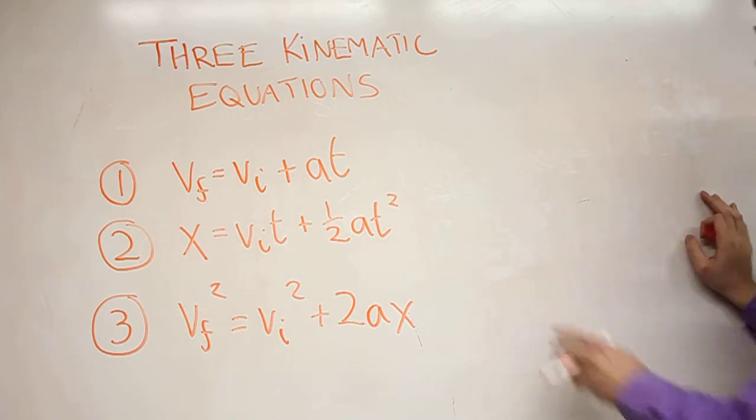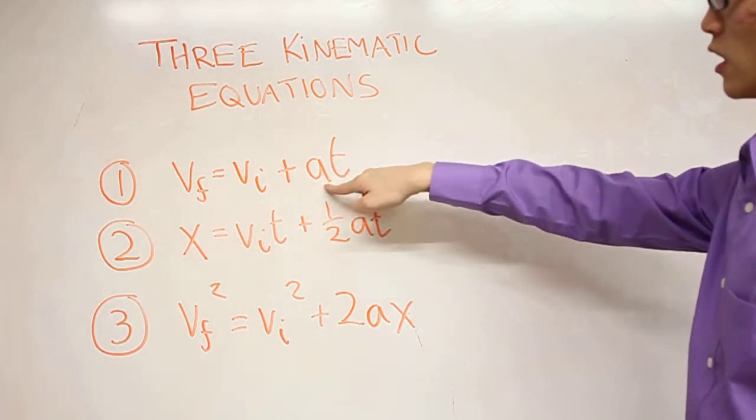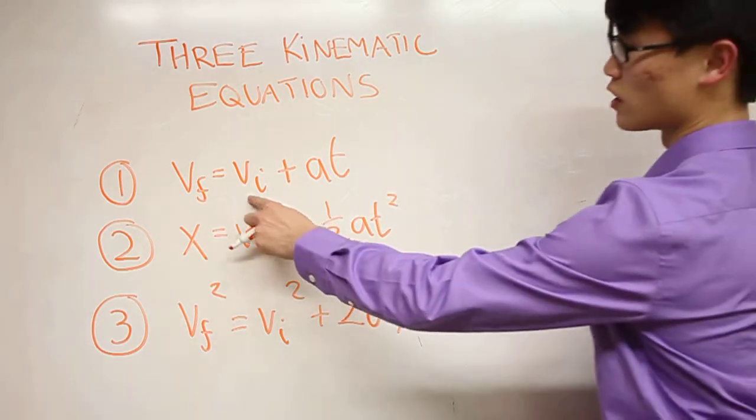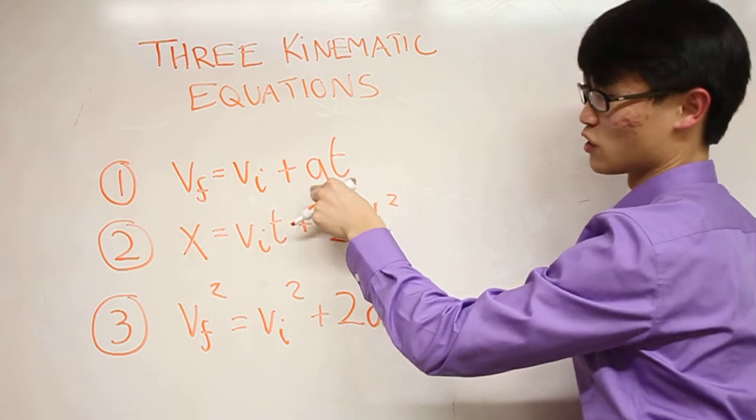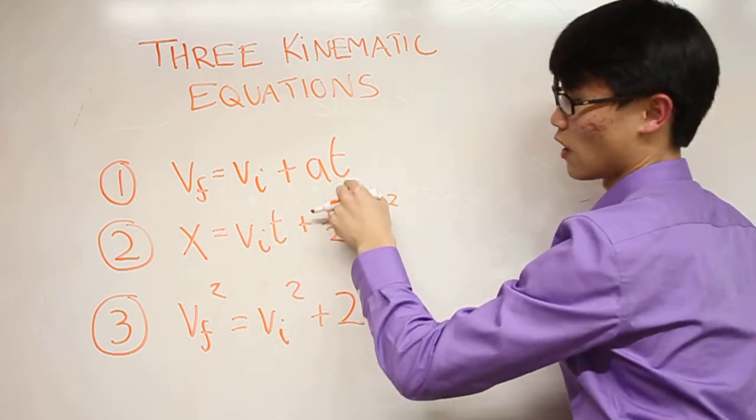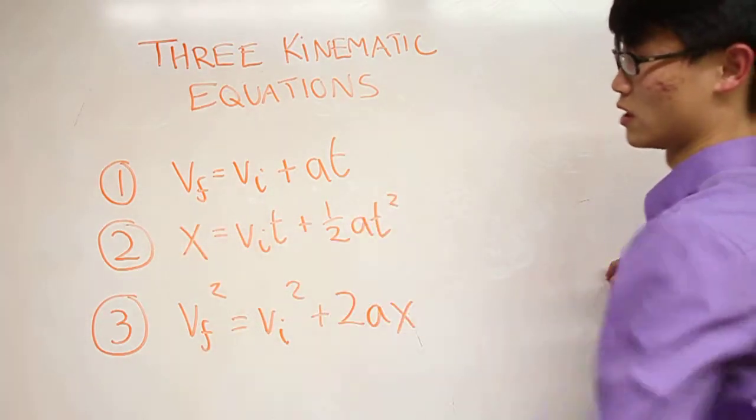I'm going to quickly go through these. First, we have v_f = v_i + at. So let's say you start at zero meters per second and then you get an acceleration of two meters per second squared for five seconds. You're going to end up with a final velocity of ten meters per second. Simple plug-in numbers.